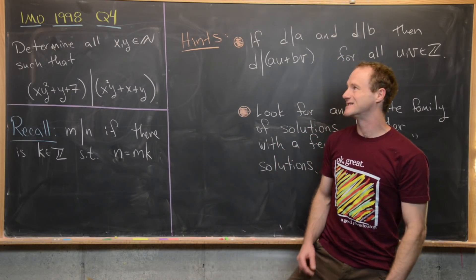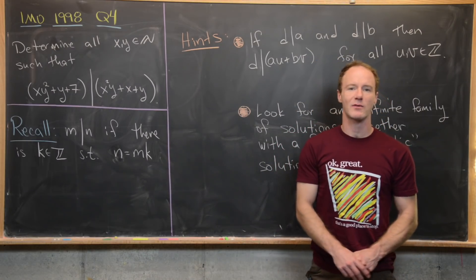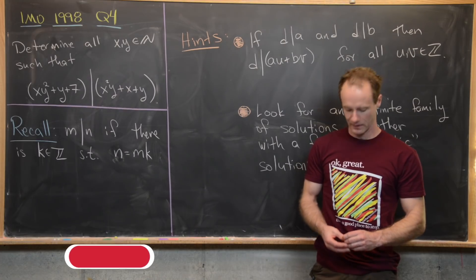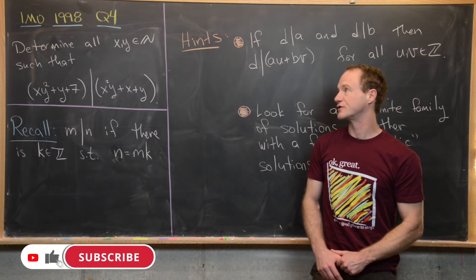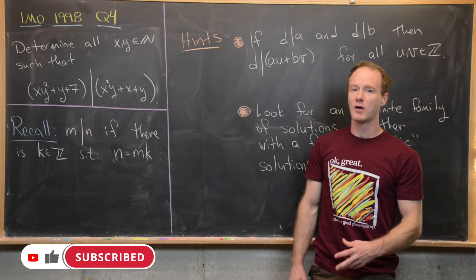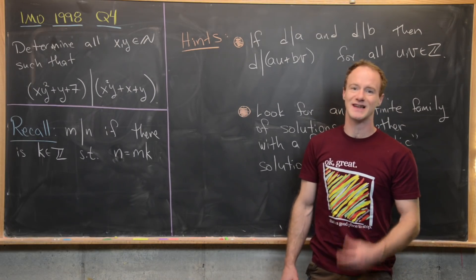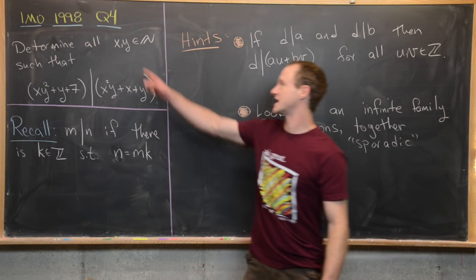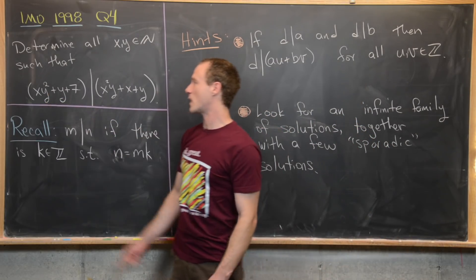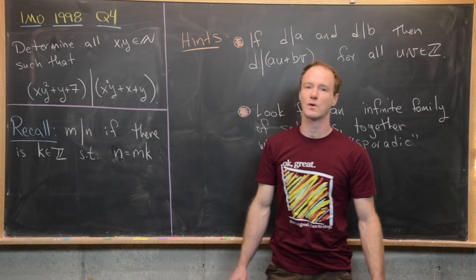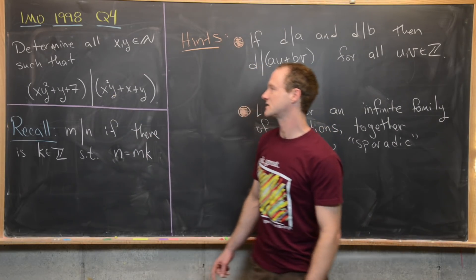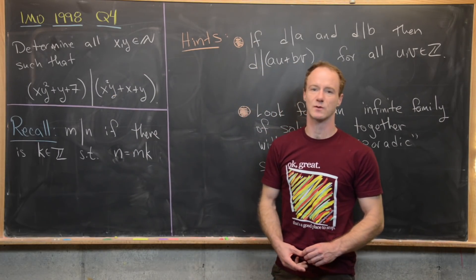Here we're going to look at a solution to a nice number theory problem from the 1998 International Math Olympiad. This is question four. Our goal is to determine all positive integers — natural numbers — x and y, such that x times y squared plus y plus 7 divides x squared y plus x plus y.